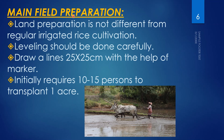For main field preparation, land preparation is not different from regular irrigated rice cultivation. Prepare the field with the help of bullocks or tractors. Leveling should be done carefully so water enters all four sides of the soil equally. Draw lines at 25 cm by 25 cm with the help of a marker. For SRI, plant-to-plant and row-to-row distance is 25 cm. Transplanting requires only 10 to 15% of the area for one acre.